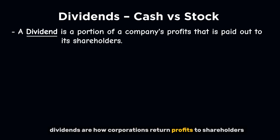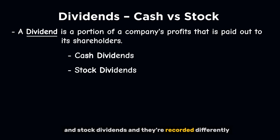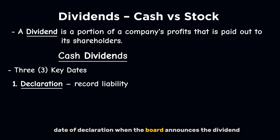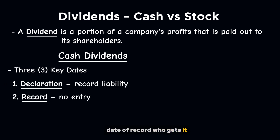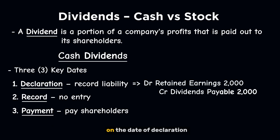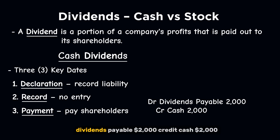Dividends are how corporations return profits to shareholders. There are two main types: cash dividends and stock dividends, and they're recorded differently. For a cash dividend, there are three key dates: the date of declaration, when the board announces the dividend; the date of record, who gets it — no journal entry; and the date of payment, when the cash goes out. Example: the company declares a $2,000 dividend. On the date of declaration, debit retained earnings $2,000; credit dividends payable $2,000 — this reduces retained earnings and creates a liability. On the date of payment, debit dividends payable $2,000; credit cash $2,000. The liability is cleared and the cash is paid out.